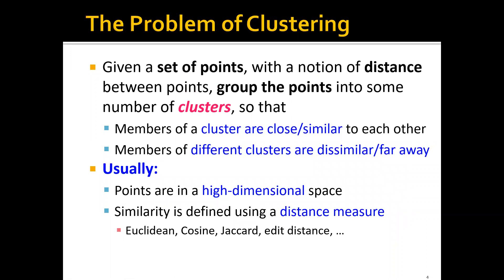Usually points are in a high dimensional space, and similarity can be defined using some distance measure — for example, Euclidean distance, cosine distance, Jaccard distance, or even edit distance.